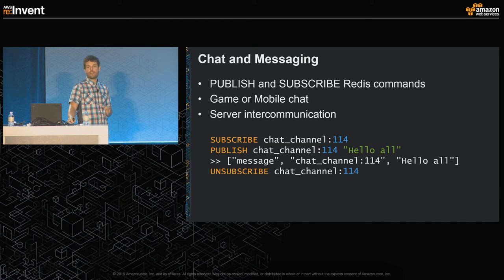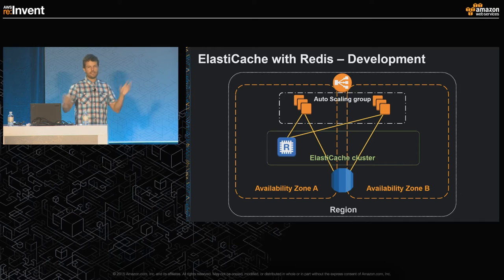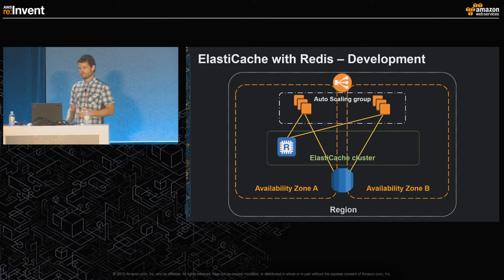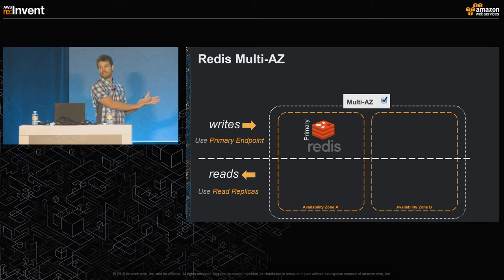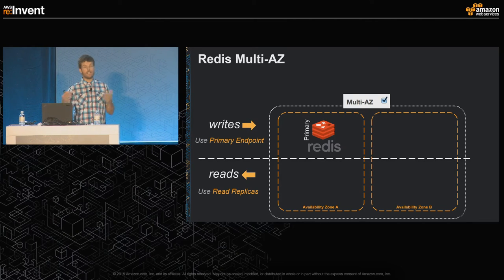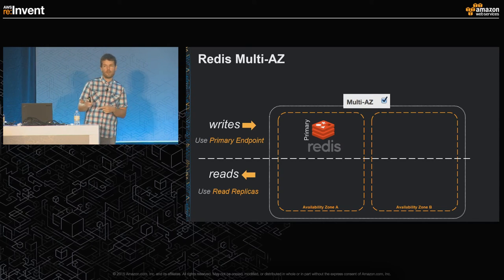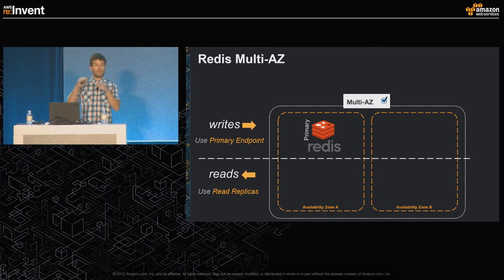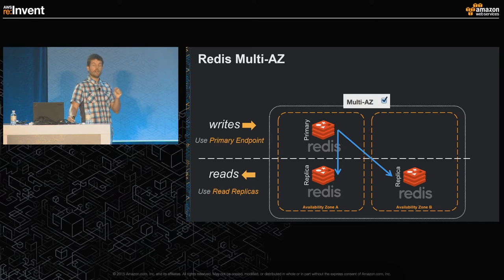In development, Redis deployment looks exactly the same as Memcache — just spin up a single-node cluster and choose Redis instead. But in production it's quite different. Redis with ElastiCache supports multi-AZ: you get one or more replicas in different availability zones, and ElastiCache as a service handles failover if there's an issue with the primary endpoint. It's just a checkbox, then you can optionally set the number of replicas. This is all asynchronous replication, so there's always the possibility of slight data loss — replication lag is on the order of a couple milliseconds or less.